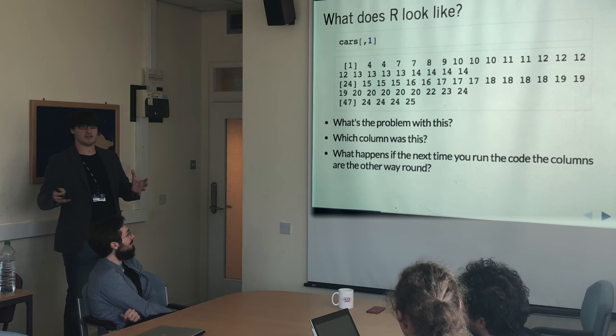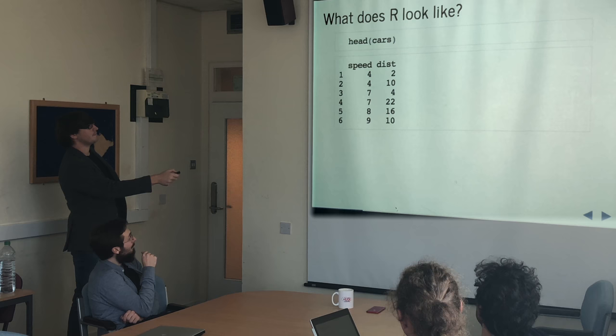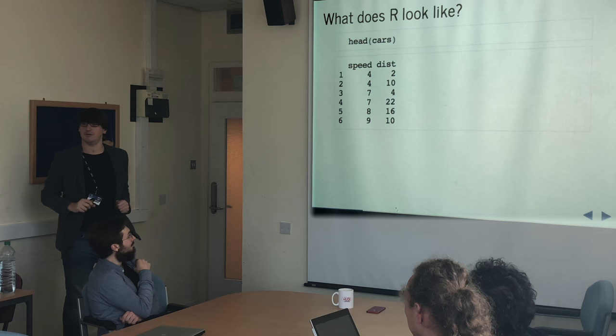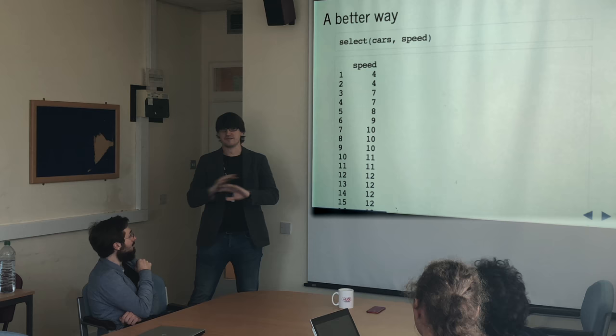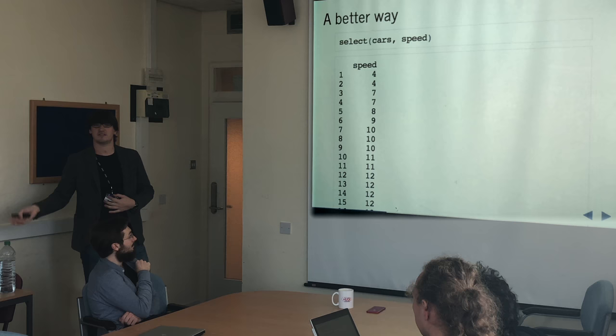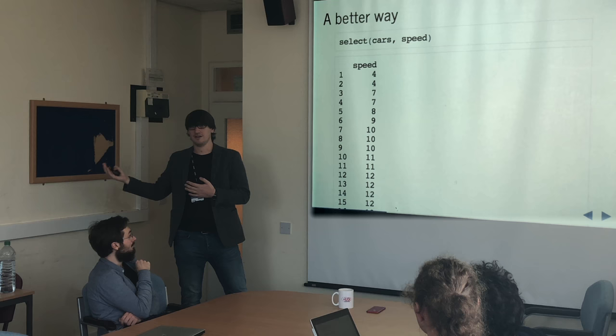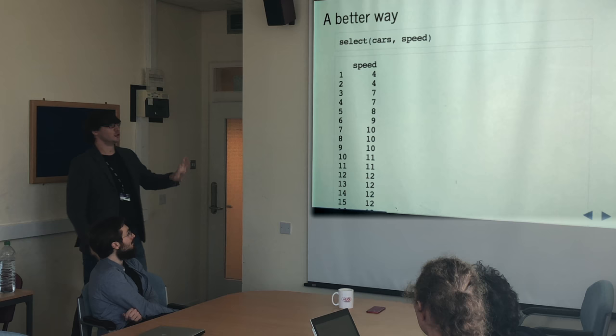This is where the Tidyverse comes in — a set of functions which deals with a lot of this problem. It's a lot less ambiguous if we just ask for the speed column instead of the first column. So with the Tidyverse, from cars we select the speed column. We don't have to specify that as a string; it does that automatically. You can also do non-standard evaluation where you pass it a variable and tell it to evaluate that variable to work out which column you want — that could be dynamic generation too.